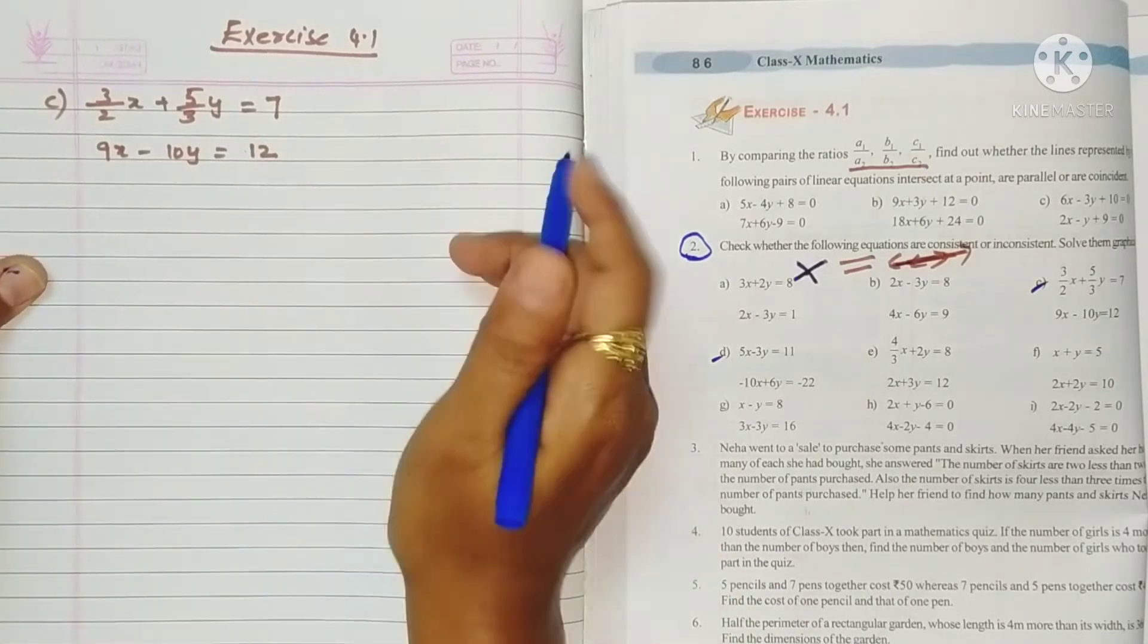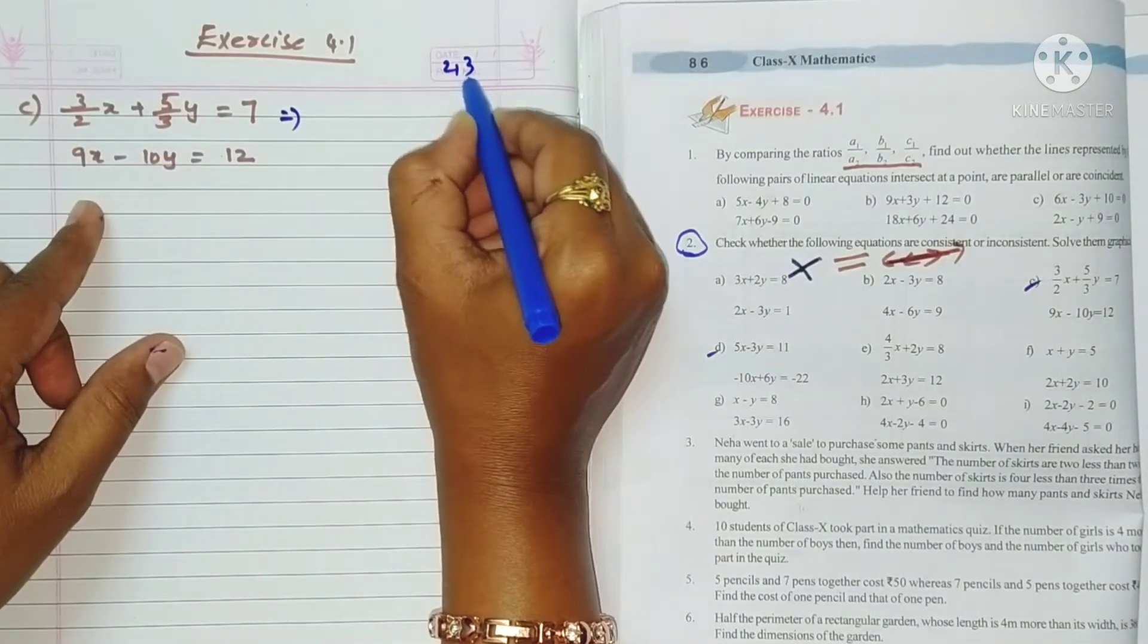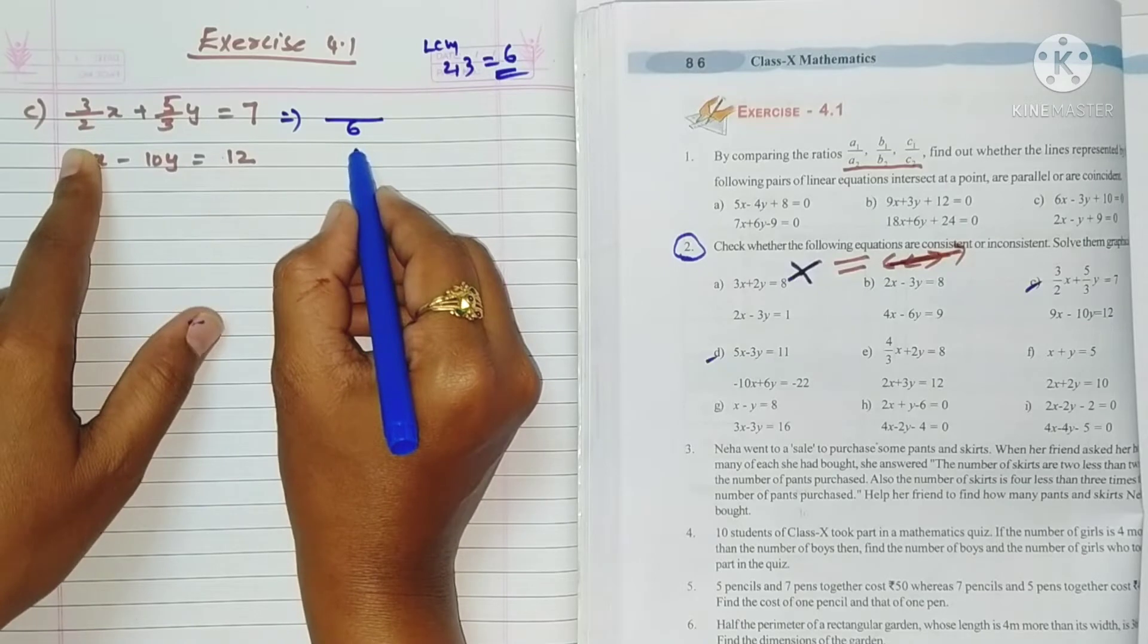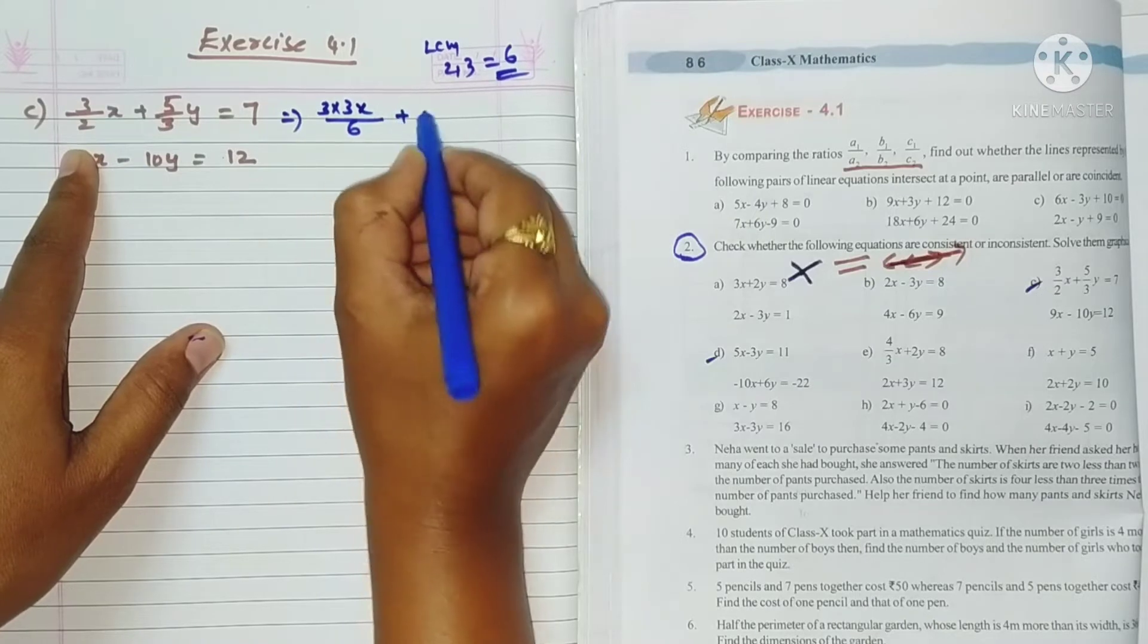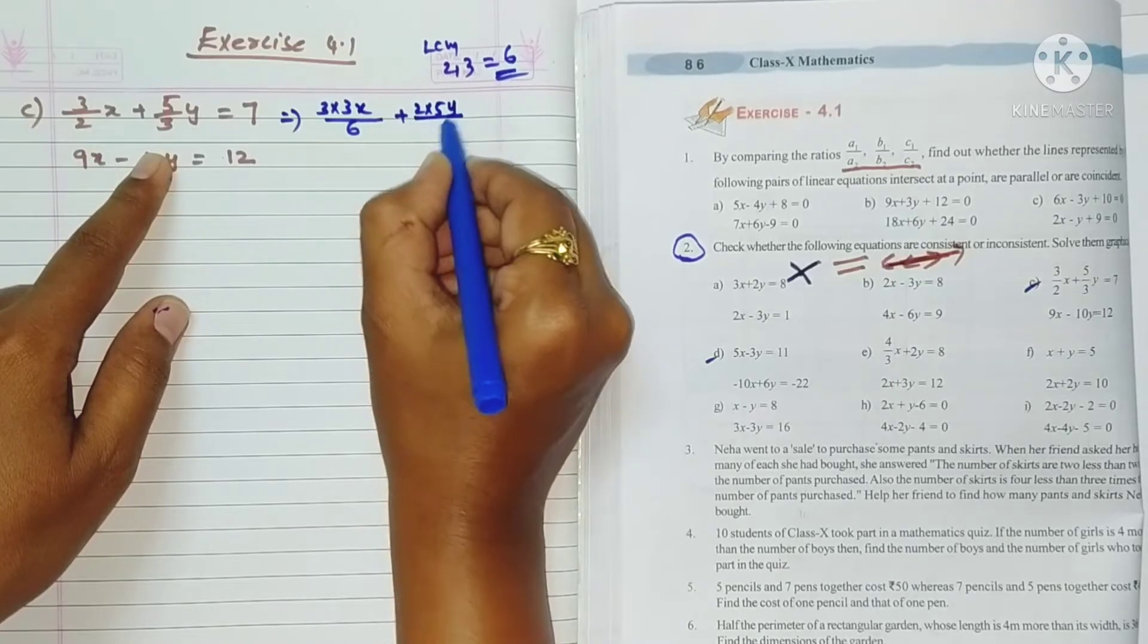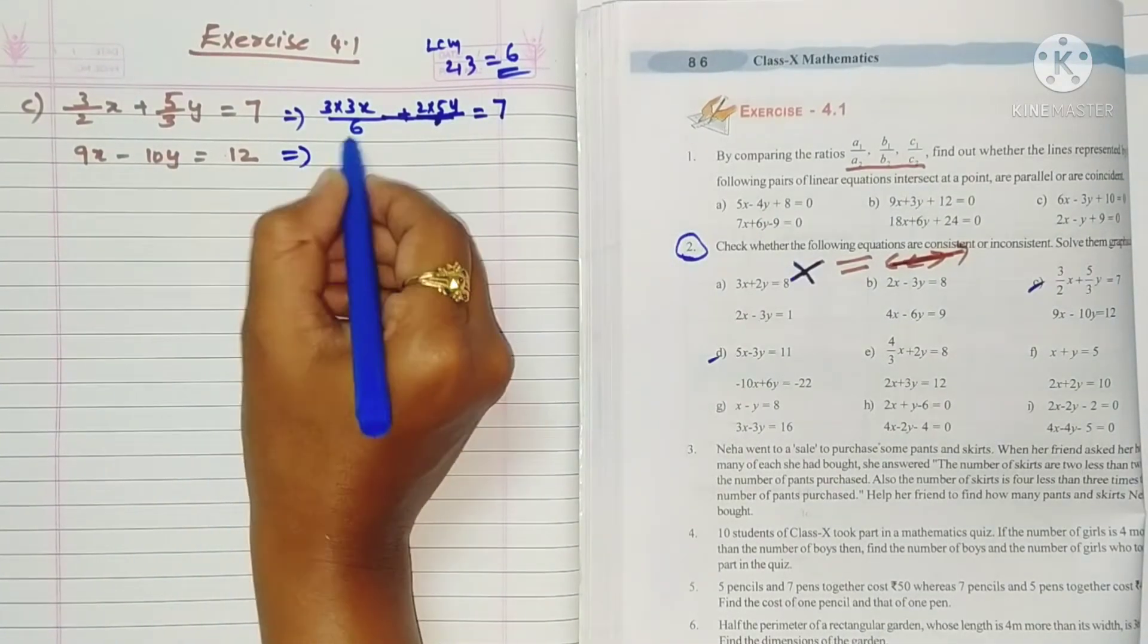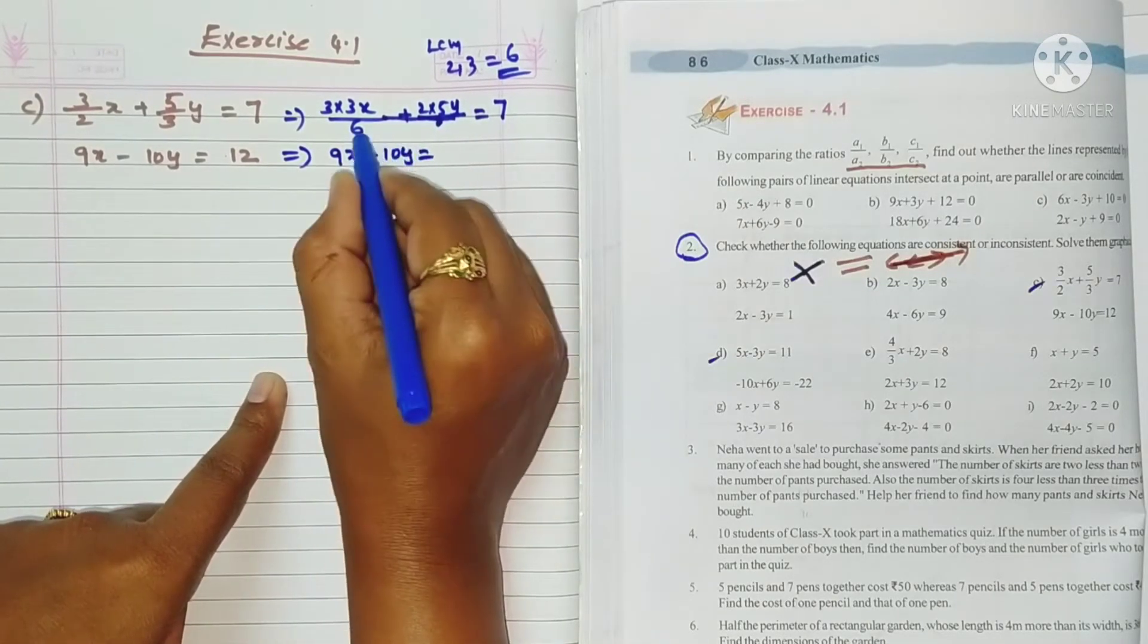First we will see this is the given problem. Here in the denominator are 2 and 3, so the LCM is 6. So 6 divided by 2 is 3 times, 3 into 3x plus, 6 divided by 3 is 2 times, 2 into 5y, plus 6 equals 7 times 6. That is 9x, 2 times 5 is 10y, equals 6 times 7 is 42.